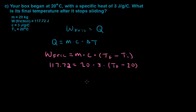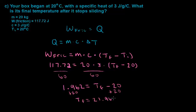So we just solve for our final temperature first by dividing by 60 on both sides. That's 20 times 3 is 60. So we get that 1.962 is equal to our final temperature minus 20. And all we have to do is add 20 on both sides so that we get our final temperature of our box is 21.962 degrees Celsius.